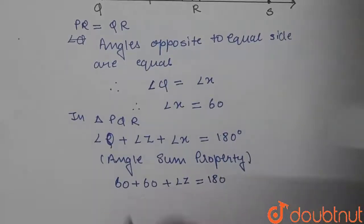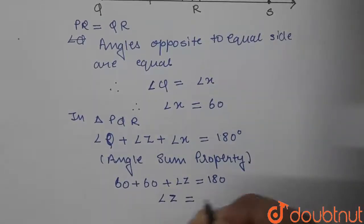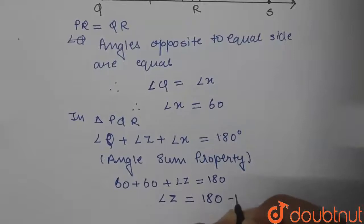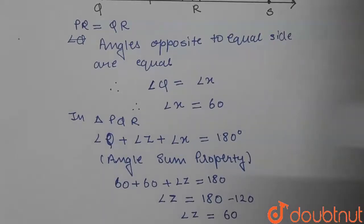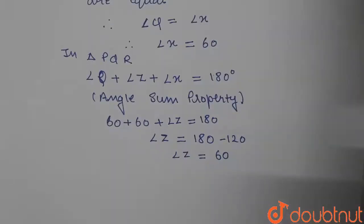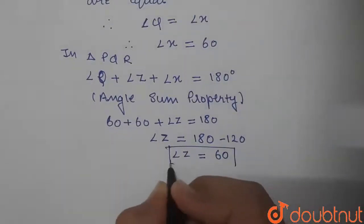So 60 plus 60 is 120°, and from here we can say that angle z is equal to 180 minus 120, that is angle z equals 60°. So this is the value for angle z.